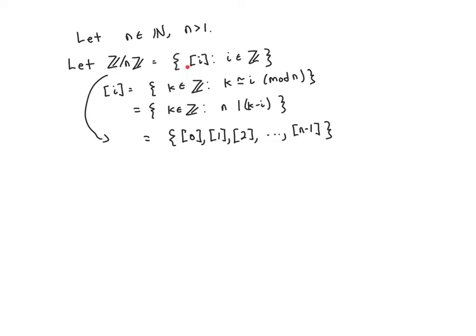This set is actually finite because the equivalence classes are [0], [1], [2], ... up to [n minus 1]. For any integer k, by the division algorithm it must be of the form qn plus r where r is less than or equal to n minus 1. That means k is congruent to r mod n, because k minus r is a multiple of n. So every integer is congruent to one of these possible remainders, making this a complete set of equivalence classes.